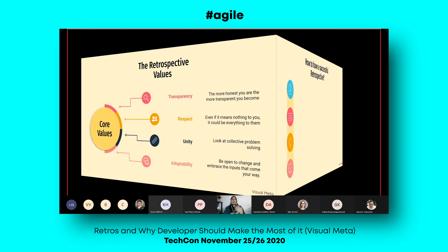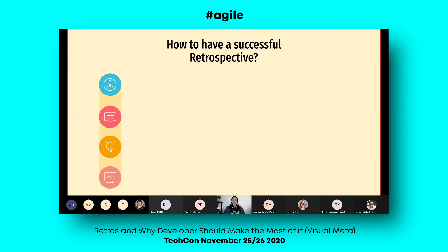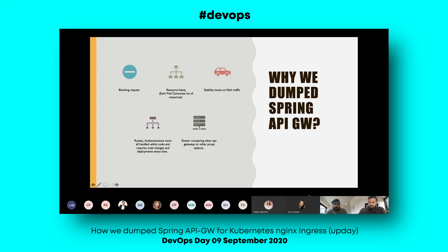What do we need to do to have a successful retrospective? We have close to 25 million active users on a monthly basis, and handling traffic is an important aspect of the product.